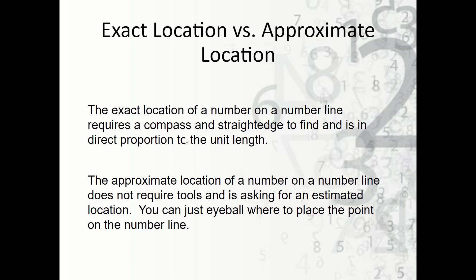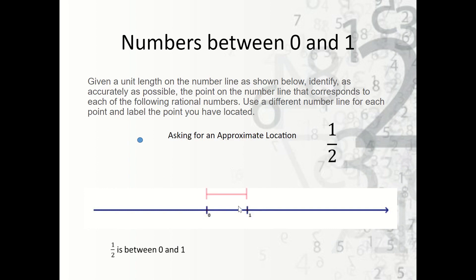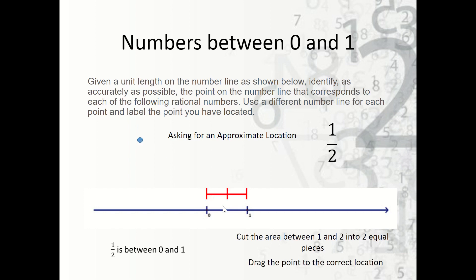We're given a unit here — zero and one — and we're going to try to plot one half on the number line. We're looking for the approximate location, so it doesn't have to be exact. One half is between zero and one, so we're going to take that interval and go about halfway through, breaking it into two equal pieces. It may not be exactly equal, but it's close. So right about there should be one half.